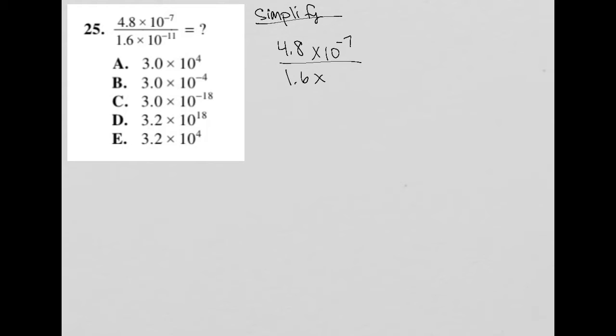So the way that we should mathematically treat this is I can almost look at these two things as separate: the 4.8 divided by 1.6 and the 10 to the negative 7th divided by 10 to the negative 11th. So in your calculator, if you divide 4.8 divided by 1.6, what you'll find is that that is 3.